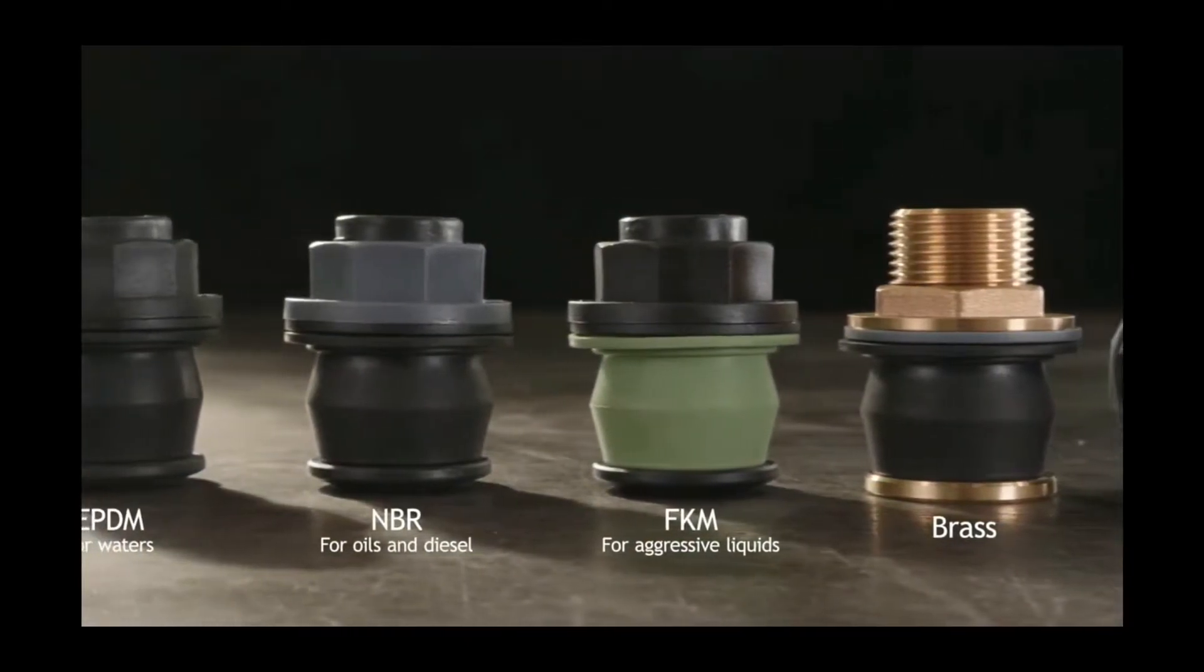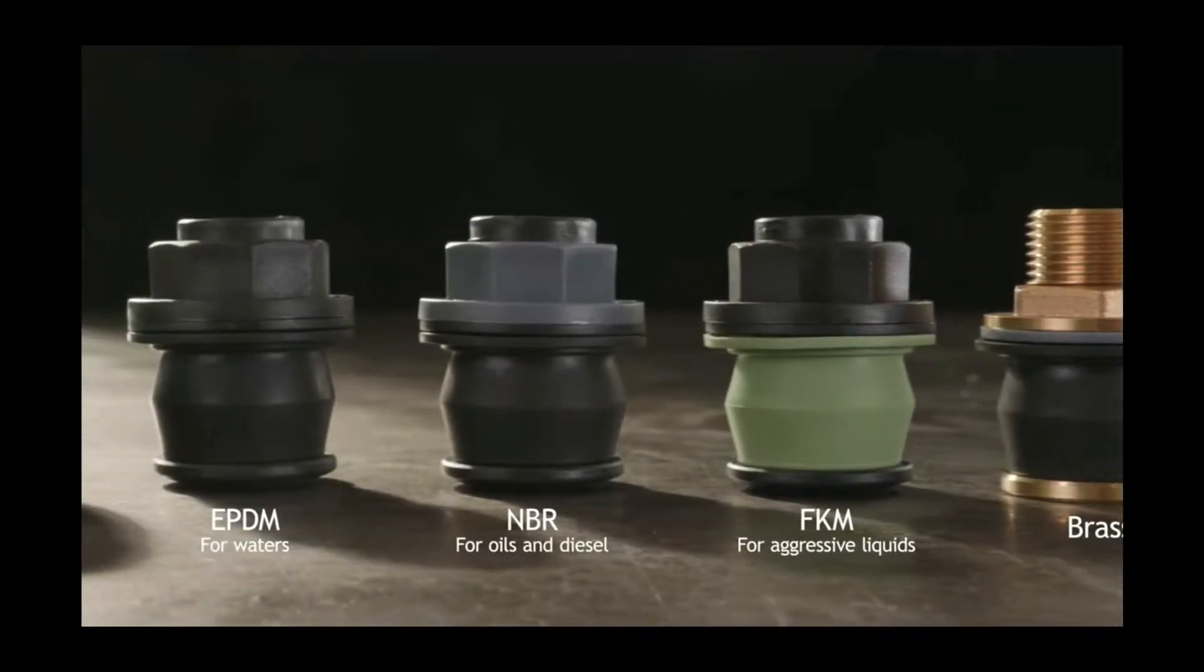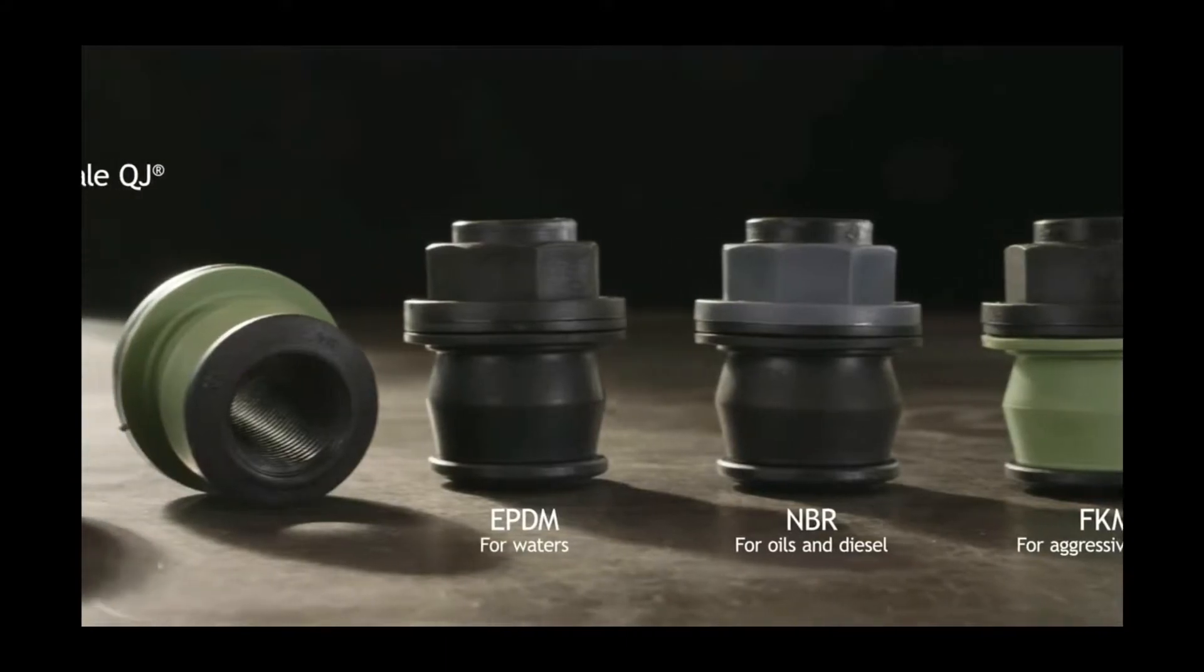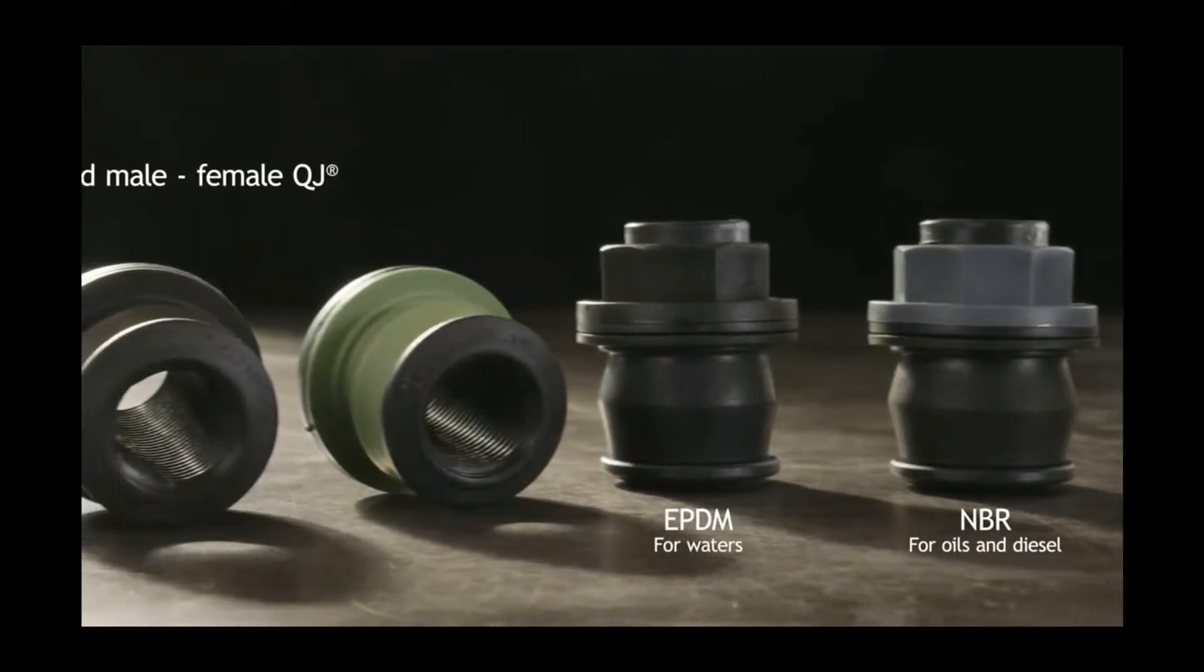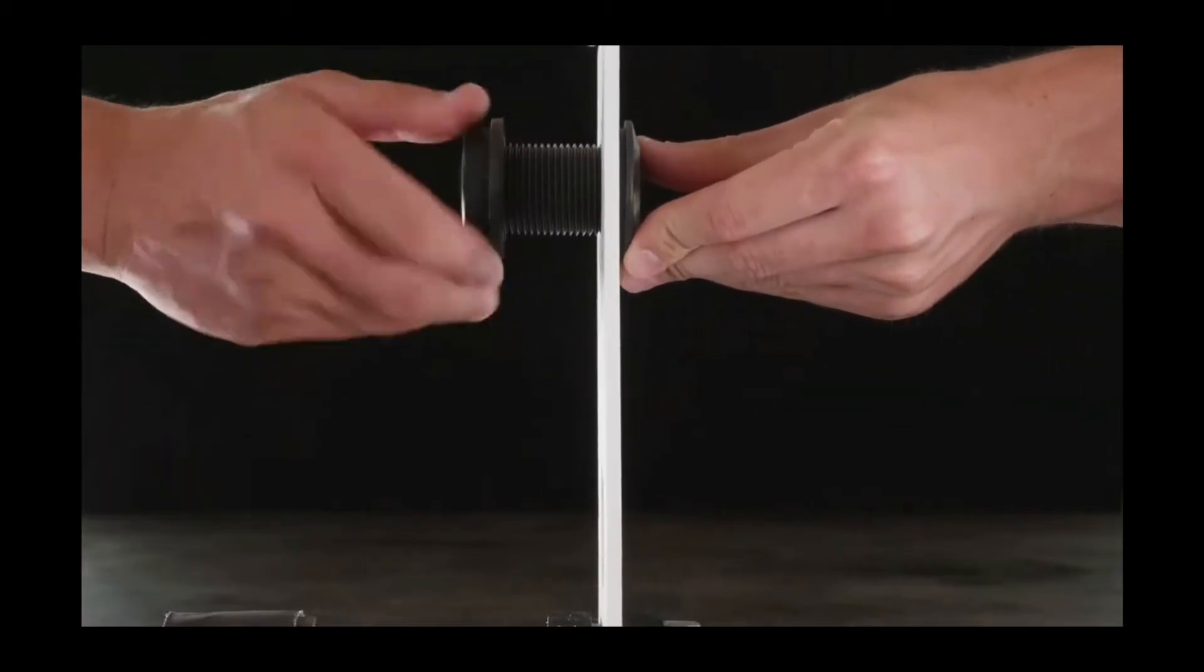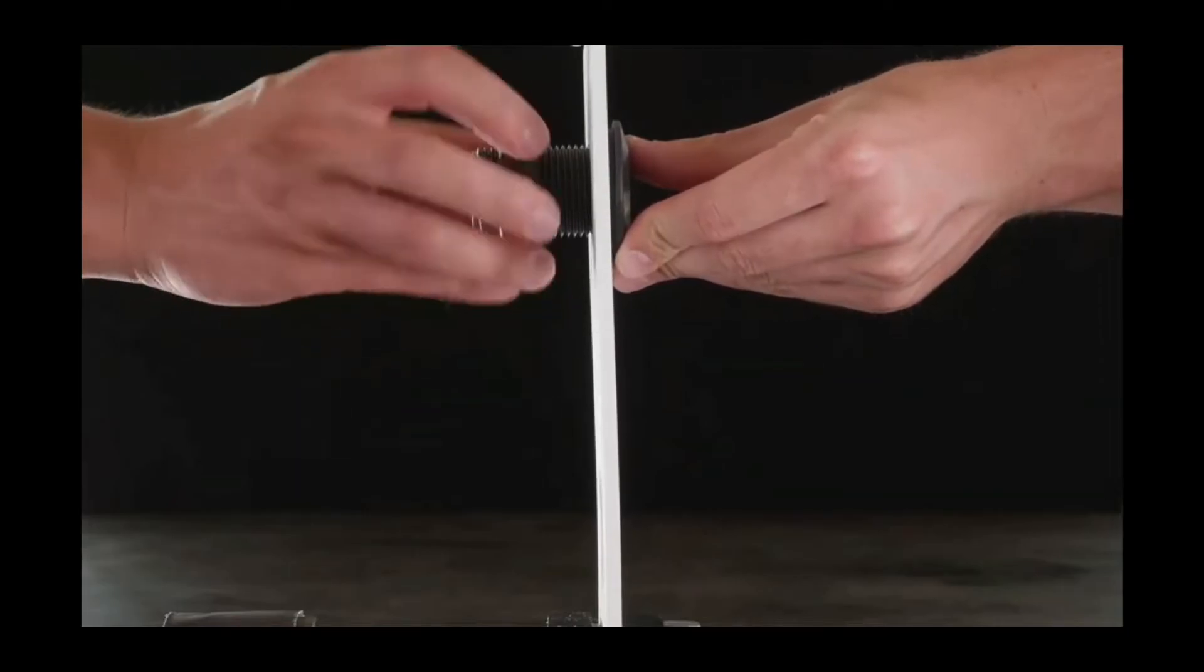Range of sizes from three-eighths of an inch to two inches with both male and female threads. You can insert the QJ by operating only from one side of the wall, allowing the ring nut to be tightened externally to the tank by hand or with a torque.